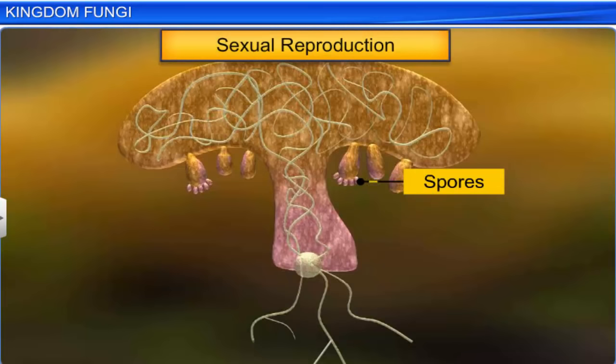Phycomycetes are found in aquatic habitats, on decaying wood in moist conditions, and as obligate parasites. Mucor and Albugo are examples of phycomycetes. Phycomycetes have aseptate and coenocytic mycelium. They reproduce asexually by zoospores in the case of motile gametes, and by aplanospores in the case of non-motile gametes. Sexual reproduction leads to the formation of zygospores after the fusion of gametes. The gametes may be either similar or dissimilar.